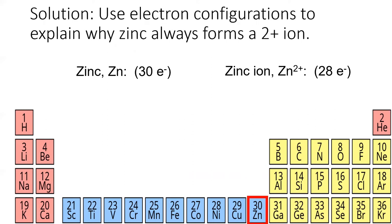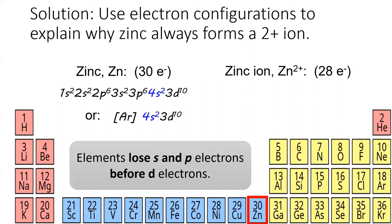Here's the solution. First, I'll show the electron configuration of neutral zinc. Then remember, elements lose their s and p electrons before they lose their d electrons. So zinc has two valence electrons, both of which are in the 4s subshell.